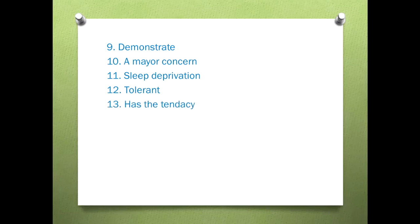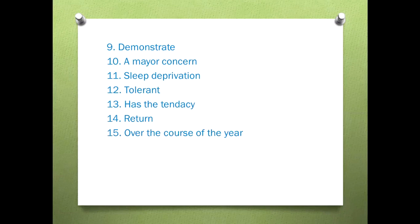Number thirteen: 'has a tendency' — the quality of always behaving the same way. For example: 'I have the tendency to run every day' — like a routine. Number fourteen: 'return' — to come back from a place. Number fifteen: 'over the course of the year' — during a period of time or process. For example: 'You are going to study over the course of the year.'